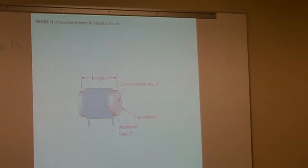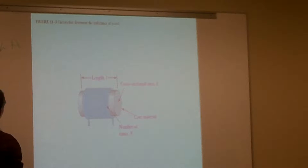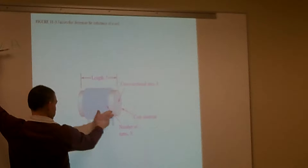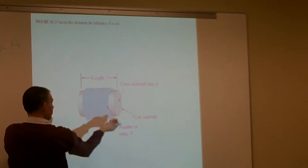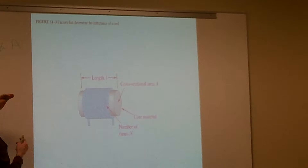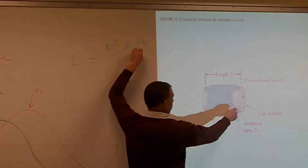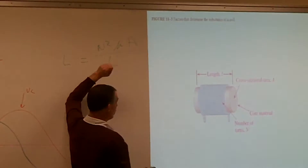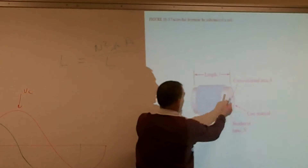It's our number of turns - how many coils we have going around it - times the permeability of our core, which is how well it accepts the magnetic flux going through it, helping induce our magnetic fields across our wires, times the cross-sectional area of our core material, divided by the length of the coil along it.